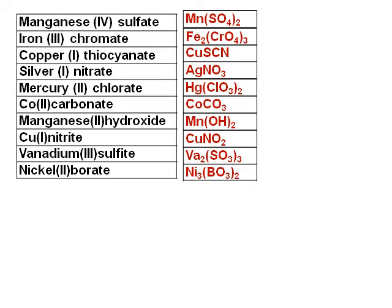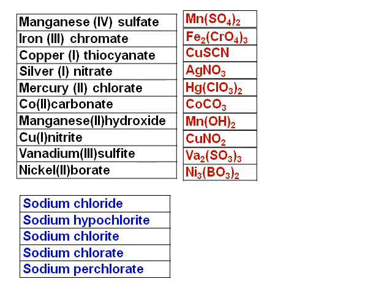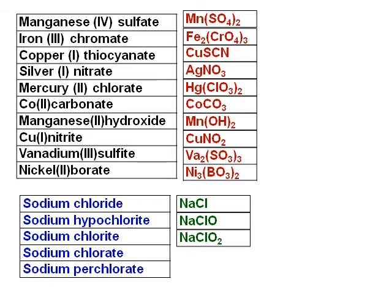The next group forms the oxychlorides, and I have purposely given them in order. Sodium chloride, sodium hypochlorite, chlorite, chlorate, perchlorate — the formulas become NaCl, NaClO, NaClO₂, NaClO₃, and NaClO₄. What I want you to know is to memorize the names of the anions: -ide, hypochlorite, chlorite, chlorate, perchlorate. You can see that in the formula, the number of oxygen atoms just increases by 1, so it will be easy to remember.